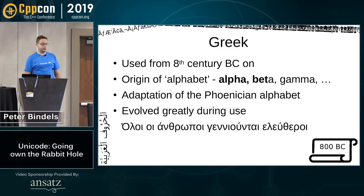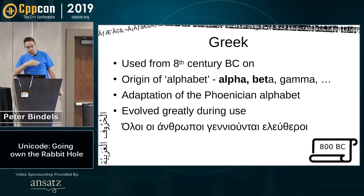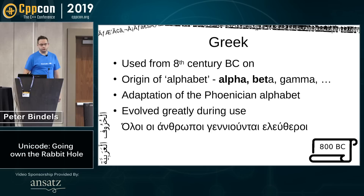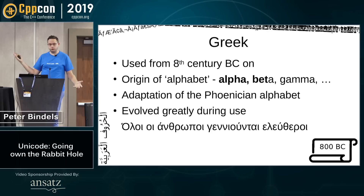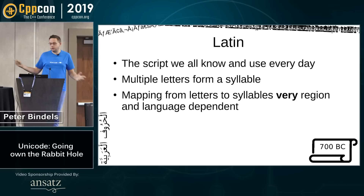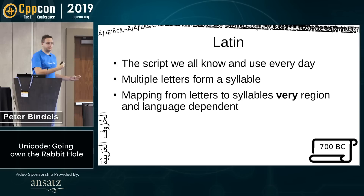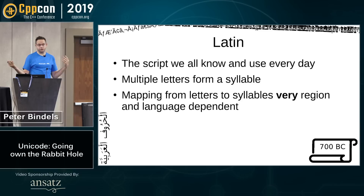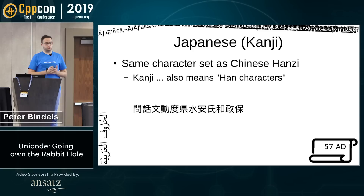Next is Greek, used from the 8th century BC, and the origin of the word 'alphabet' — from alpha, beta, gamma. It's an adaptation of the Phoenician alphabet. Then there's Latin, which I almost forgot to include because I don't think of it as a script anymore — it's just what we use every day. Multiple letters form a syllable, and trying to read a language using these letters without knowing the exact pronunciation is really hard because every place has its own pronunciation, even within English, where American and British pronunciation are very different.